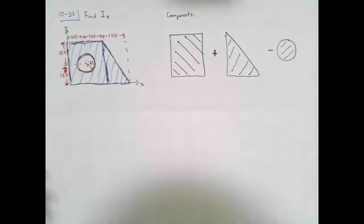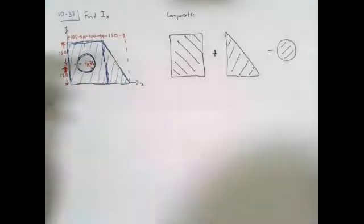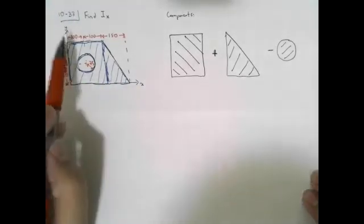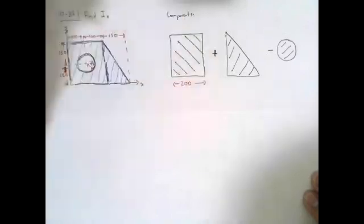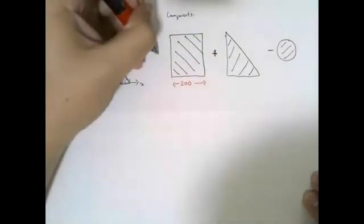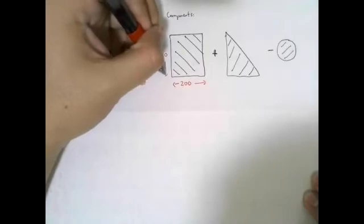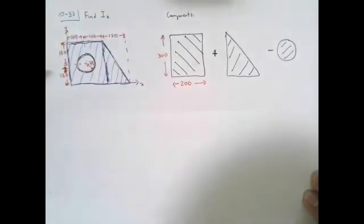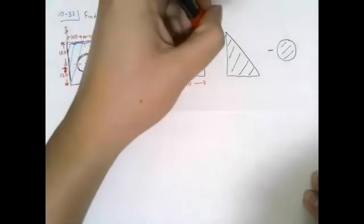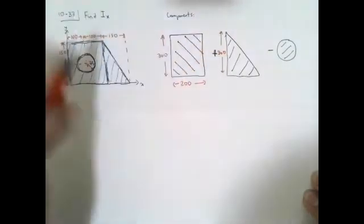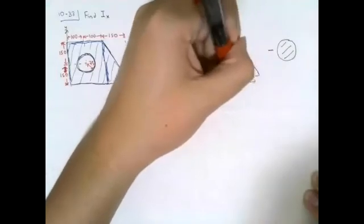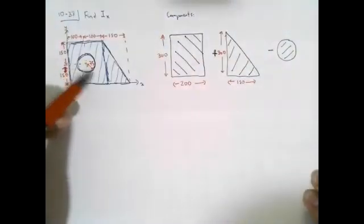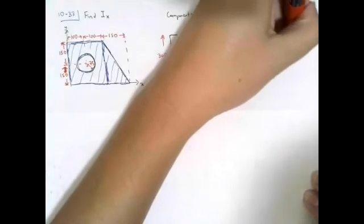To solve this, we first figure out the dimensions of these shapes. For the rectangle, we have a base of 200 millimeters and a height of 300 millimeters. For the triangle, we have a height of 300 millimeters and a base of 150 millimeters. And for the circle, we have a radius of 75 millimeters.